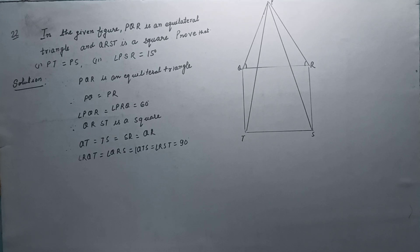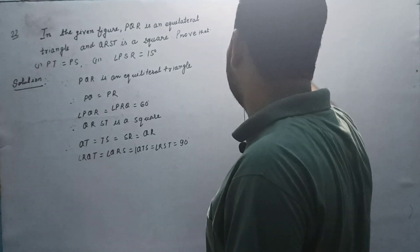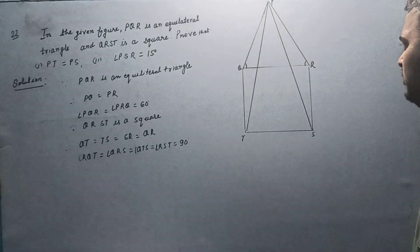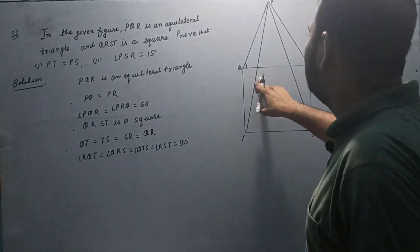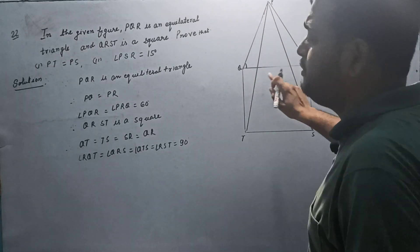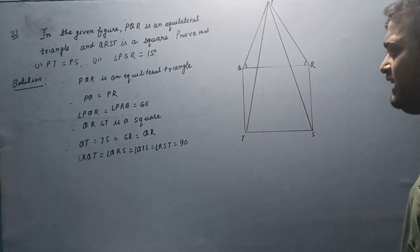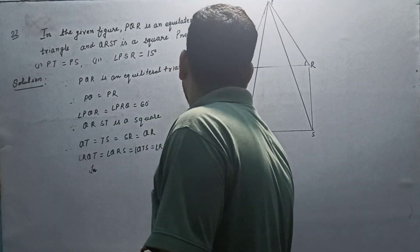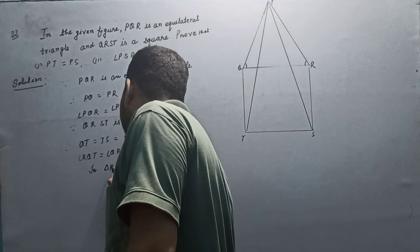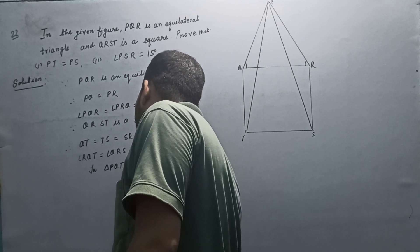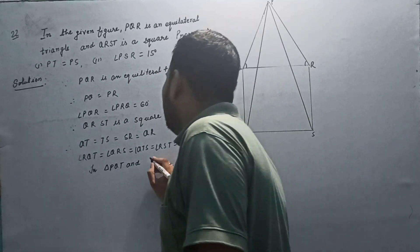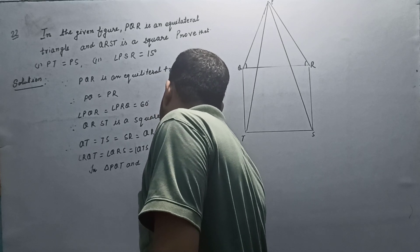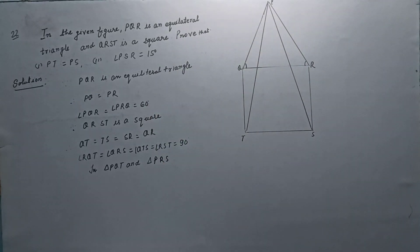Students, first of all, what we will do is take two triangles. If we can prove these two triangles congruent, then PT and PS will be corresponding parts and will be equal. So we take: in triangle PQT and triangle PRS — these are the two triangles.